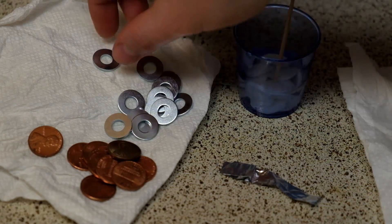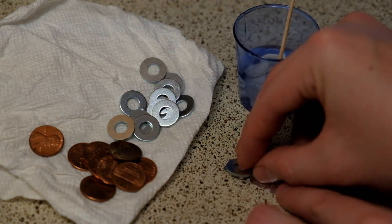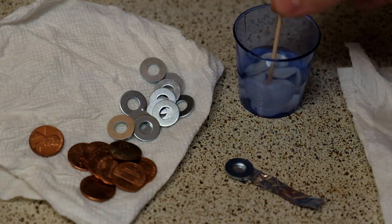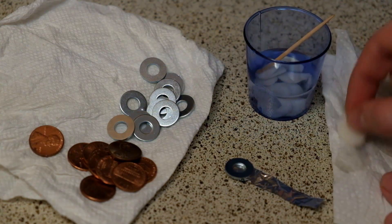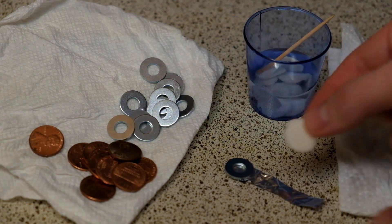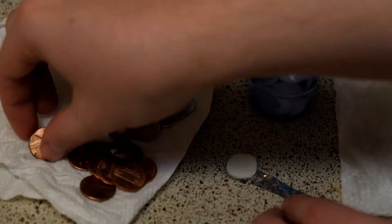And now we can start to build the battery. Take one of the zinc washers and place it on top of the foil. Then take one of the vinegar-soaked circles and lightly dry it, and place it on top of the washer. Then place one of the copper pennies on top of that.